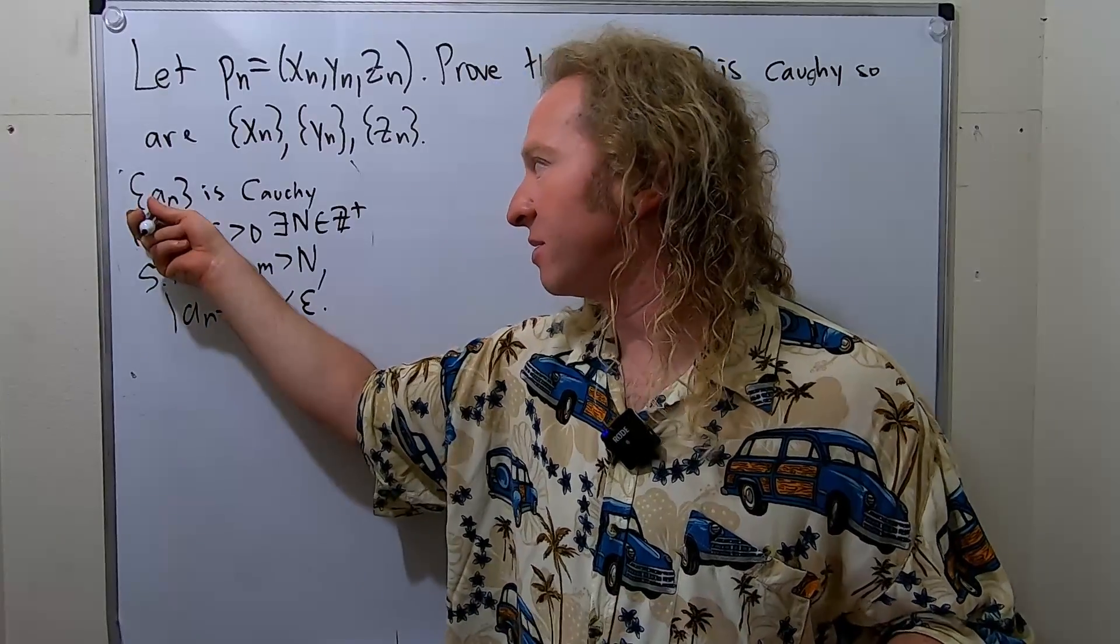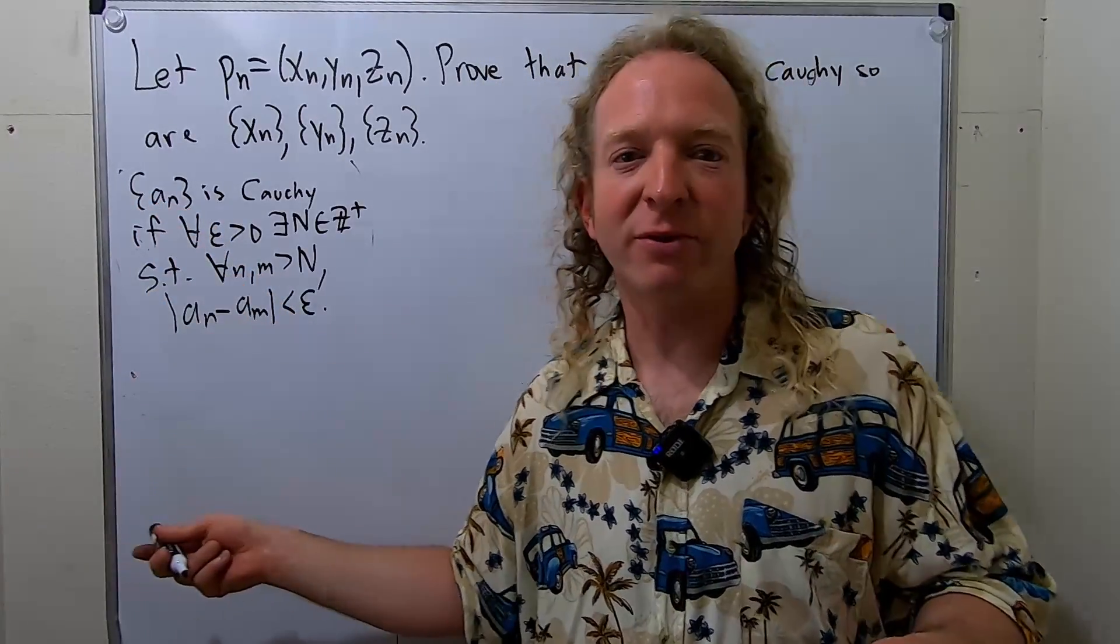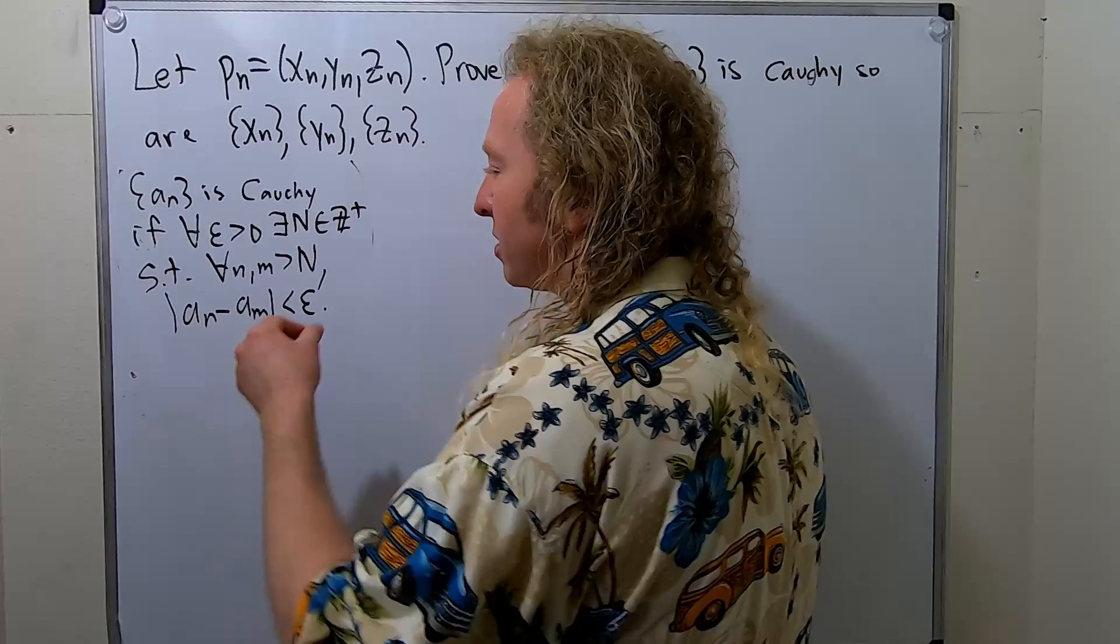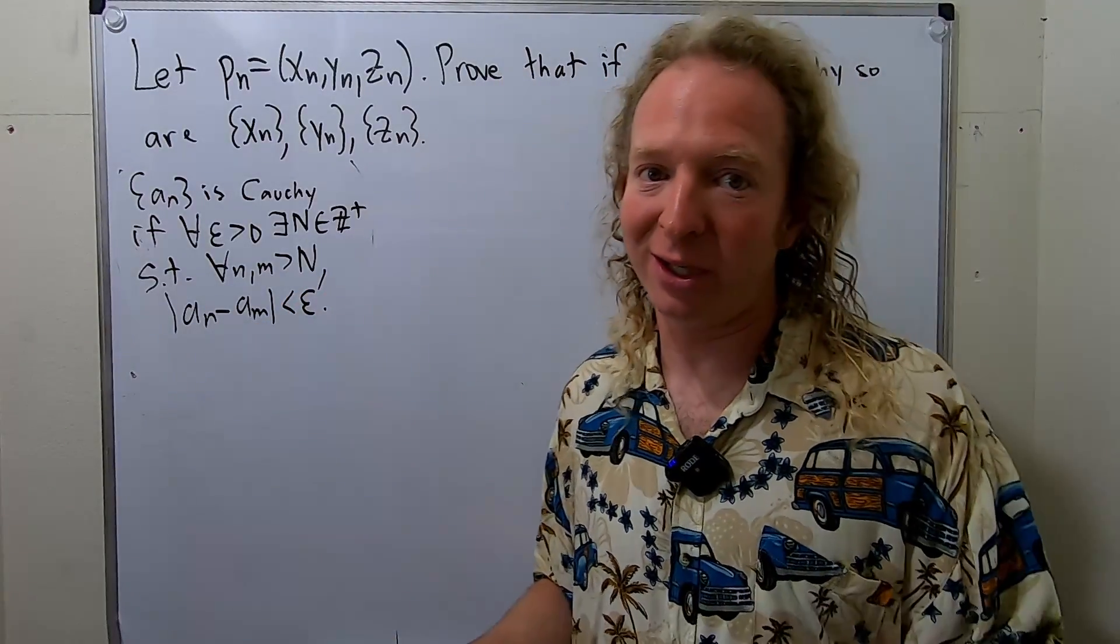This symbol here, if this is a sequence of real numbers, then it's just going to be absolute value. If this is a sequence in a higher dimensional space, we'll pretend it's the Euclidean norm.